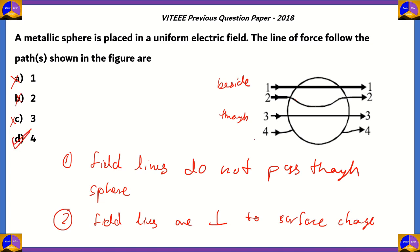The right answer is option four. In the fourth path, the electric field line starts out in the vertical direction, then because of the sphere it moves to touch the sphere at a perpendicular direction. Since the electric field lines cannot propagate through the inside of the sphere, it moves along the periphery, then exits perpendicularly as well and moves on in the original direction. So option D is the most appropriate option among the four.